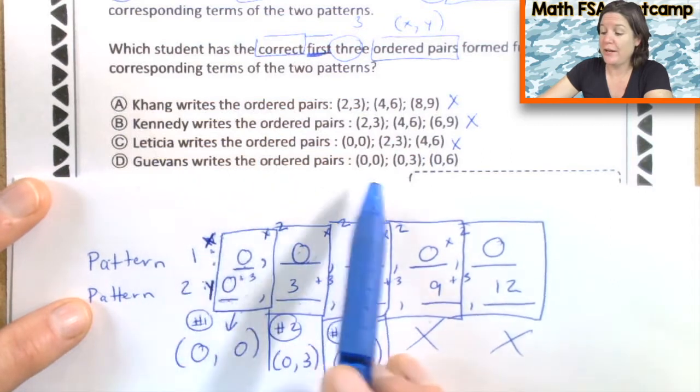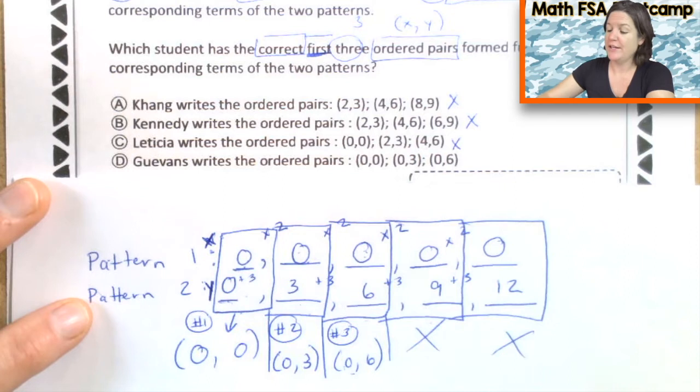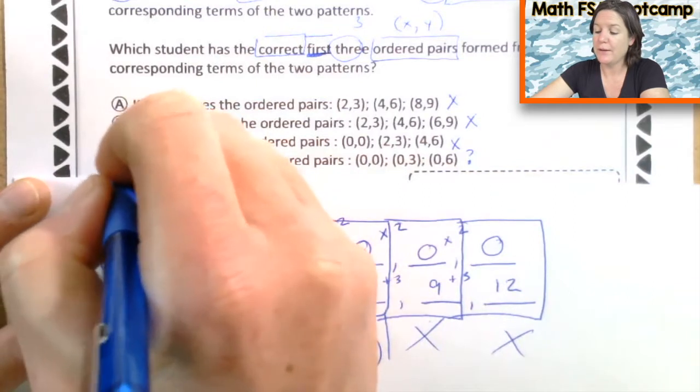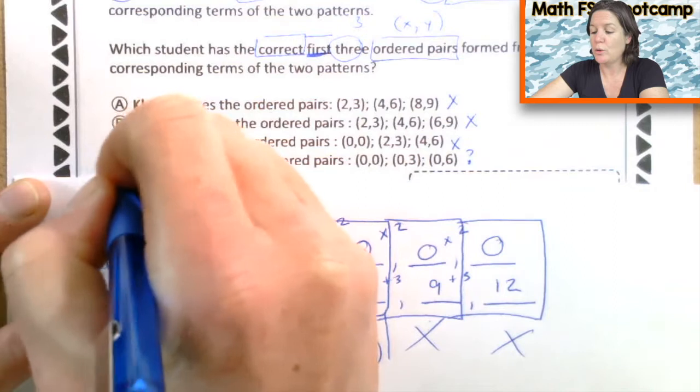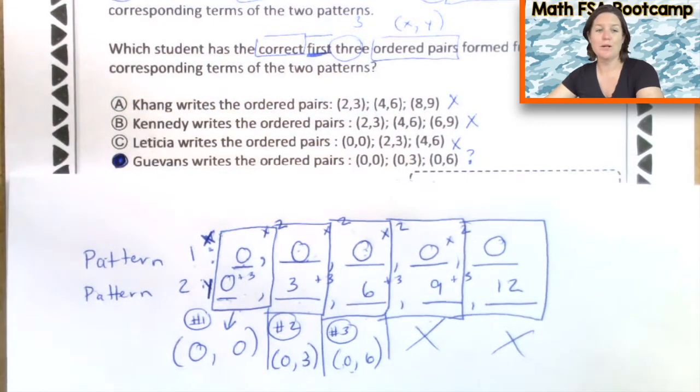We throw down our best and our best means that we read it carefully. Guevans writes the ordered pair (0,0), (0,3), (0,6). Is that what we have here? Yes, it is. So that is the one we think it is. We're going to go ahead and mark it. Don't forget to bubble it in. Do not waste your whole life away bubbling it in, but make sure you get a nice dark bubble. That's how you do number one.